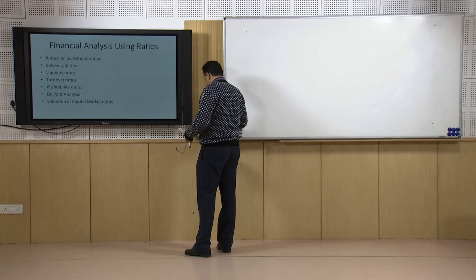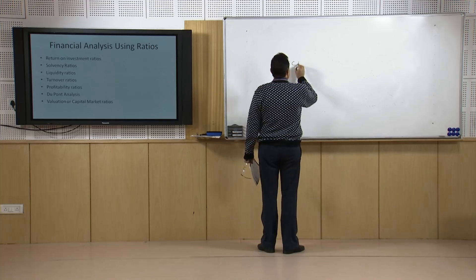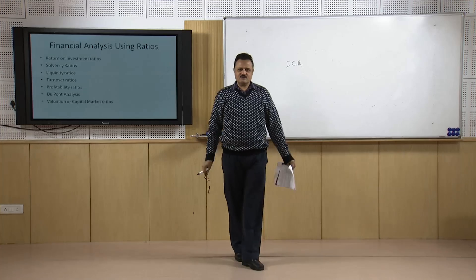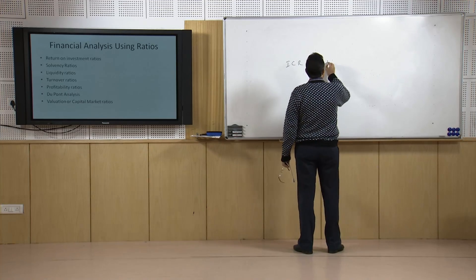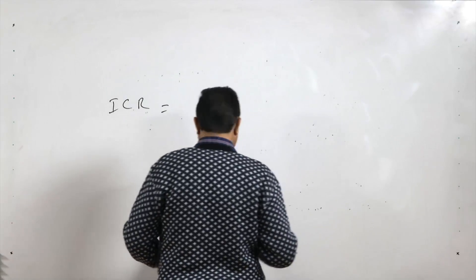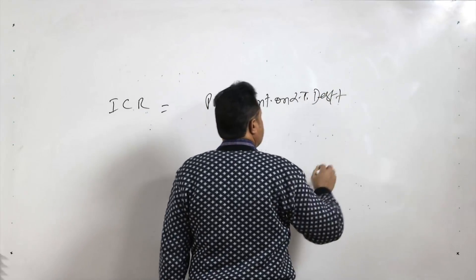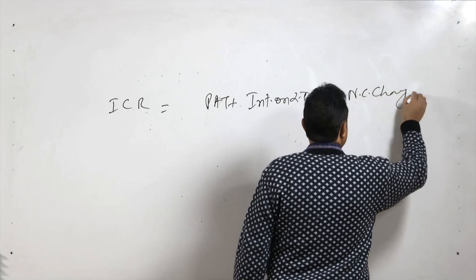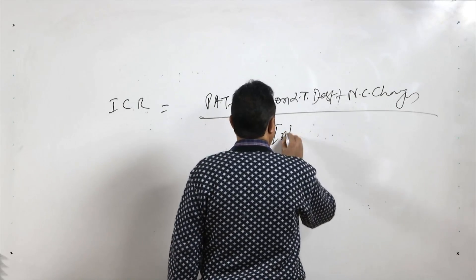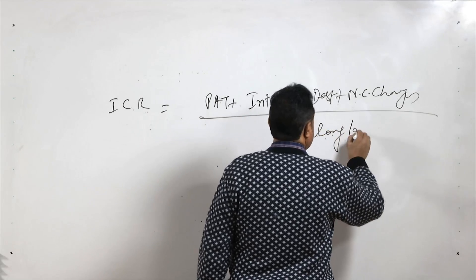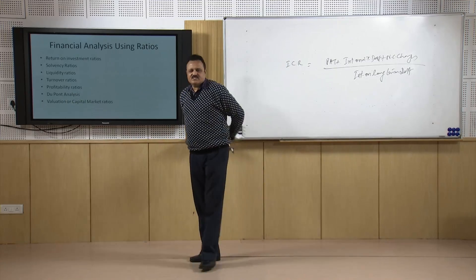Two more ratios under solvency: first is the ICR — Interest Coverage Ratio. The formula is: numerator = profit after tax (PAT) plus interest on long-term debt plus non-cash charges; denominator = interest on long-term loans.